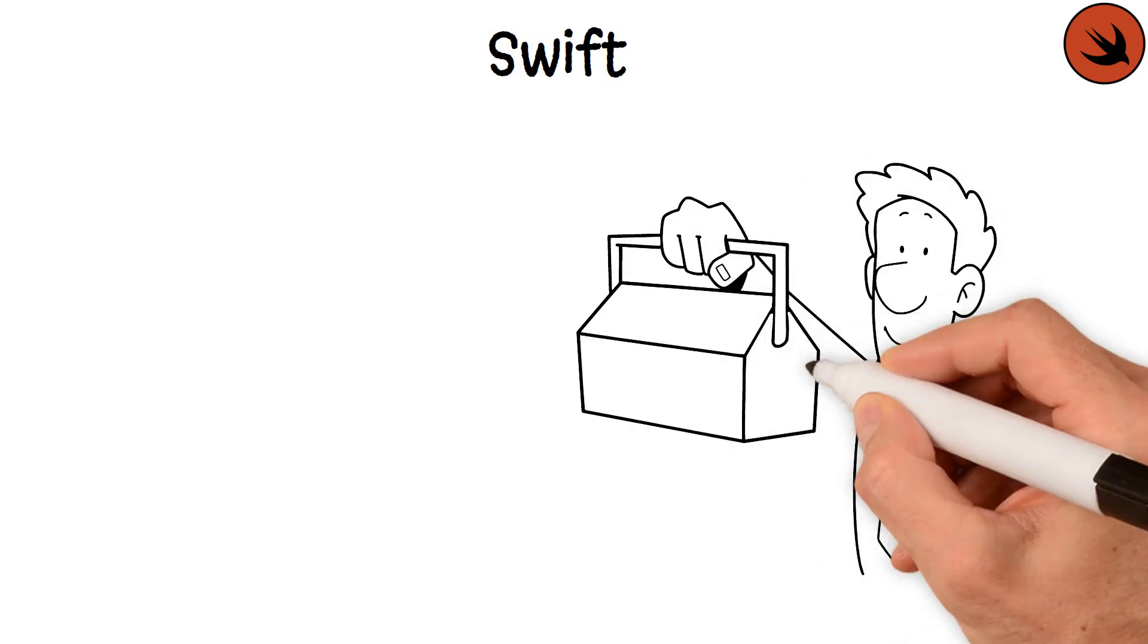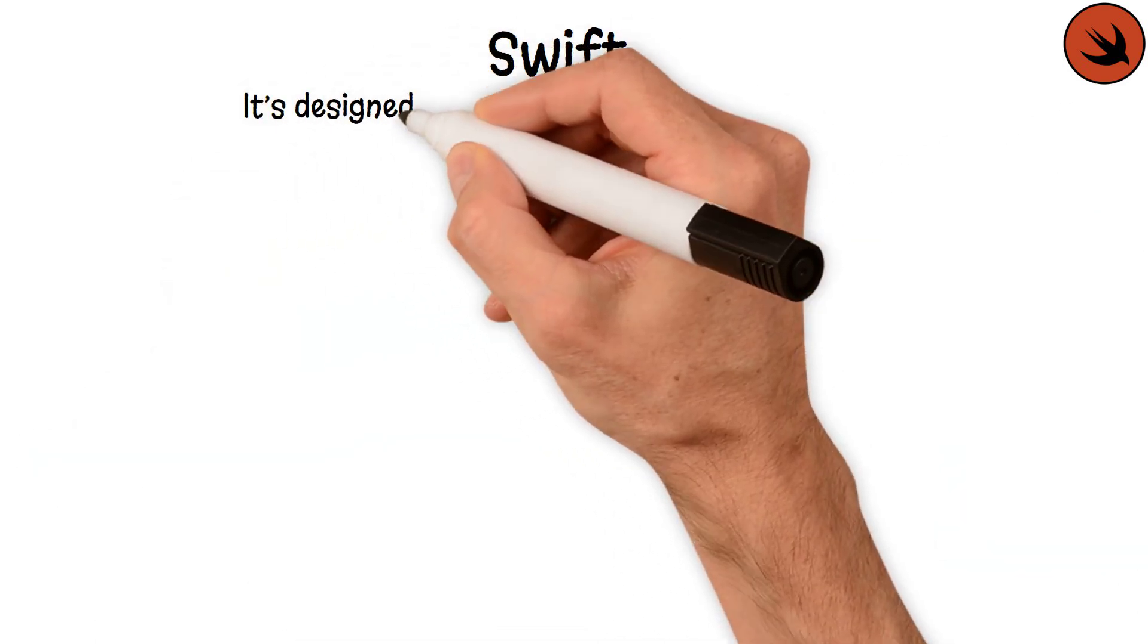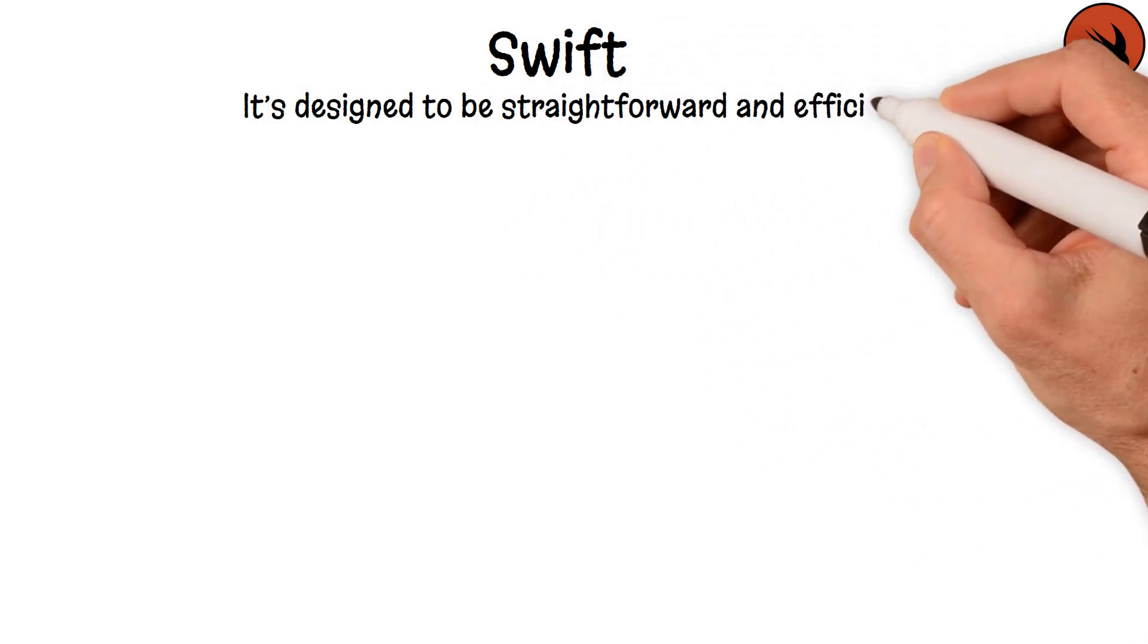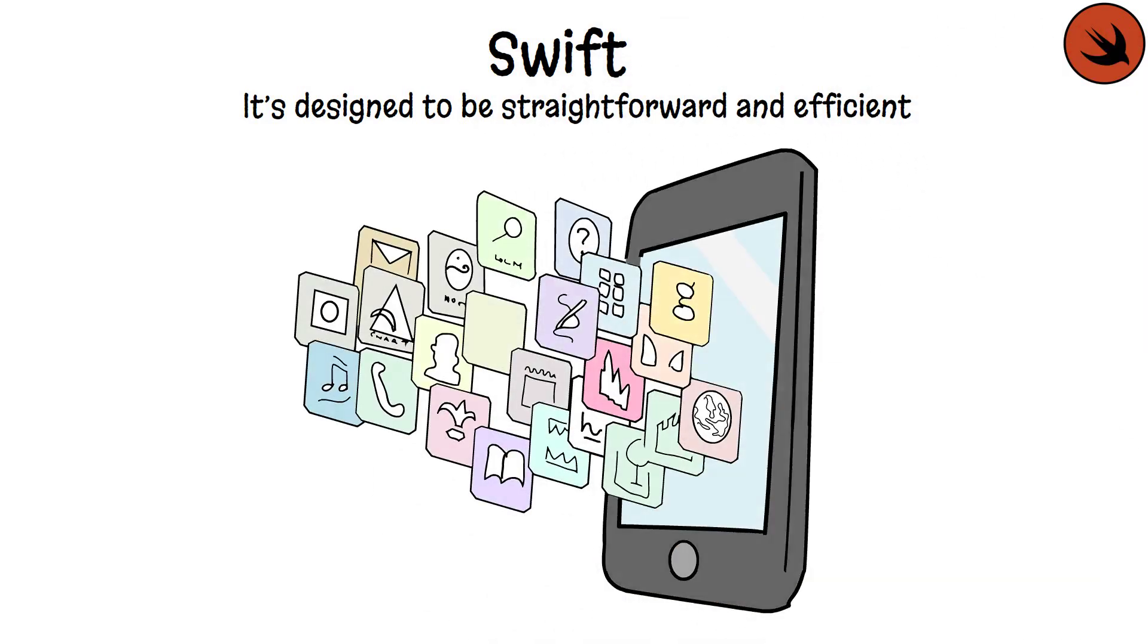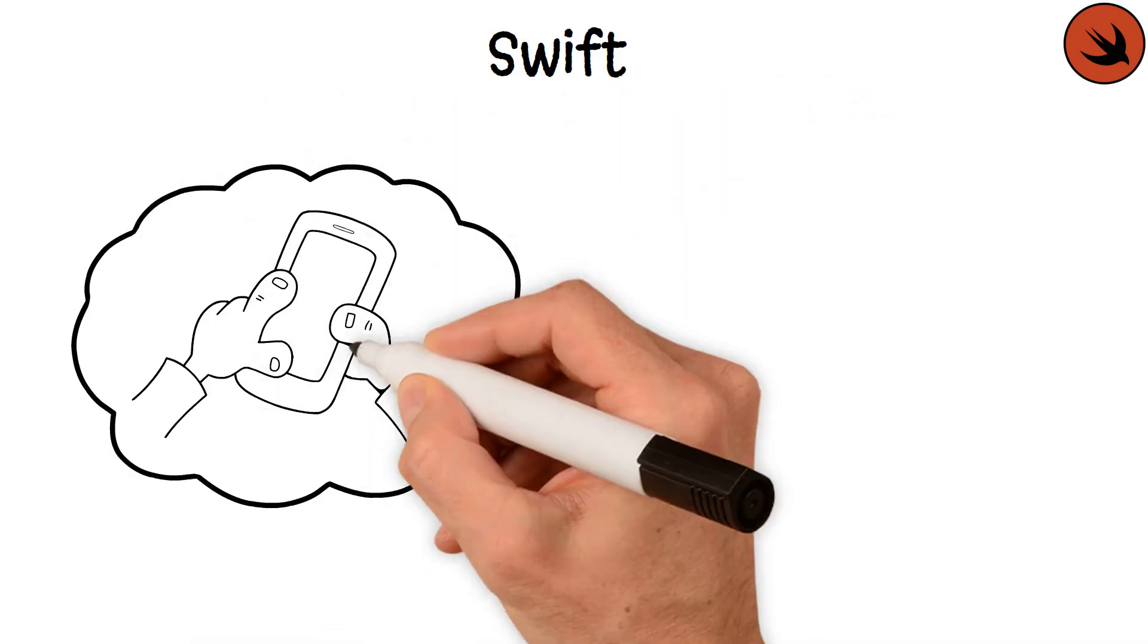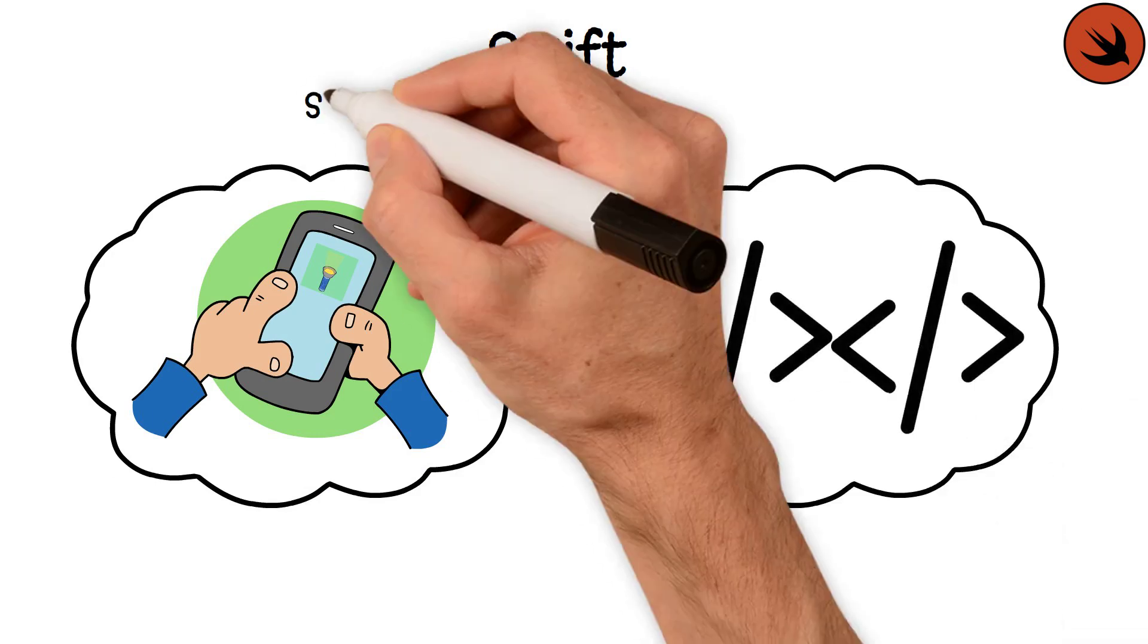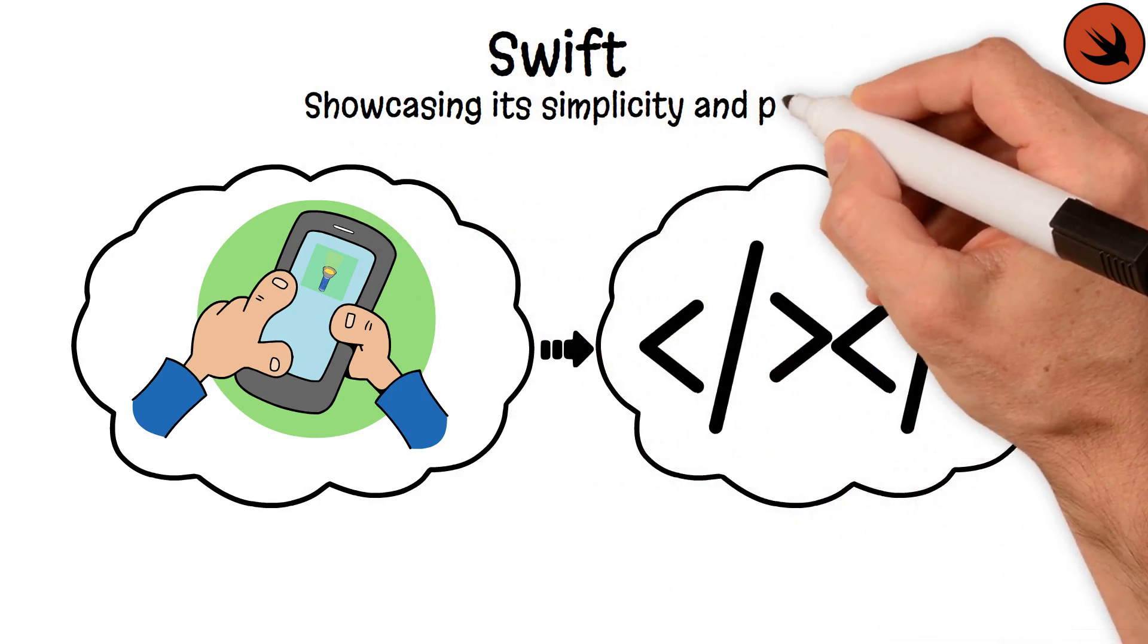Swift. Swift is the modern toolbox for creating apps on Apple devices. It's designed to be straightforward and efficient, helping developers craft beautiful and functional apps for iPhones and iPads with minimal fuss. For instance, creating a flashlight app with Swift might only require a few lines of code, showcasing its simplicity and power.